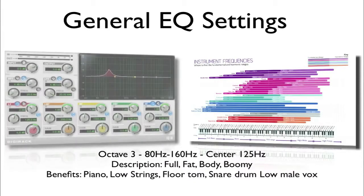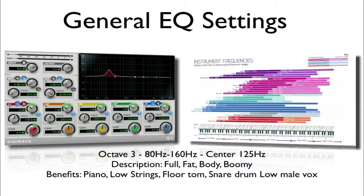Octave 3, 80 Hz through 160 Hz with a center point of 125 Hz, is going to have a full, fat, body sound. It could also sound a little bit boomy but not overly boomy. This is great for pianos, low strings, floor toms, snare drums, and even low male voices.